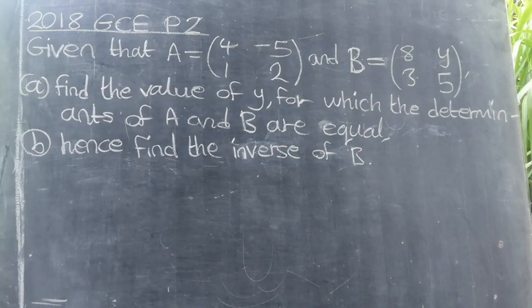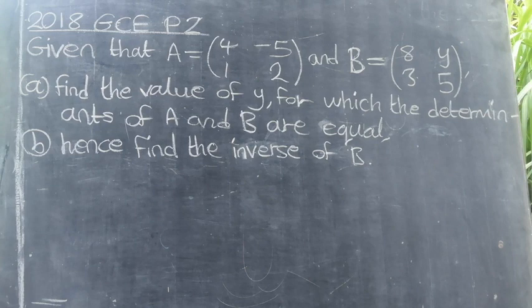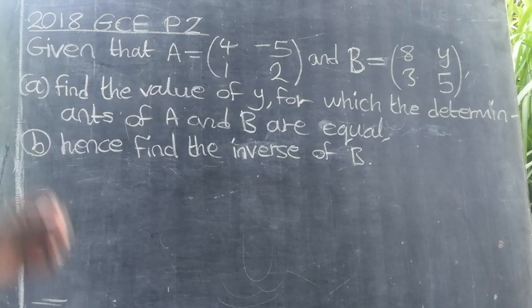Given that matrix A equals [4, 1; -5, 2] and matrix B equals [8, 3; Y, 5]. Part A: find the value of Y for which the determinants of A and B are equal. Part B: hence find the inverse of B.